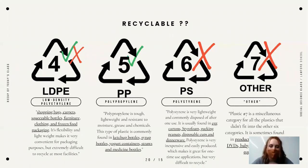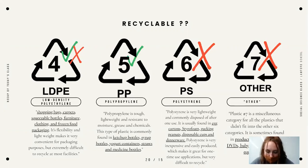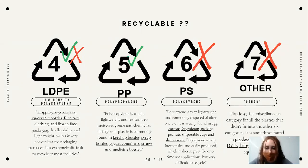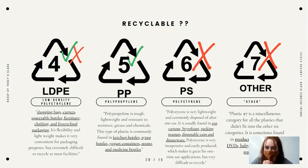Number five plastics are recyclable but must be rinsed and dried out first, and they can be reused as well. Number six plastics are not recyclable — they are mostly waste that goes into landfills. Number seven usually contains BPA, is pretty toxic and hazardous to the environment, and most places will not take it, though some will.